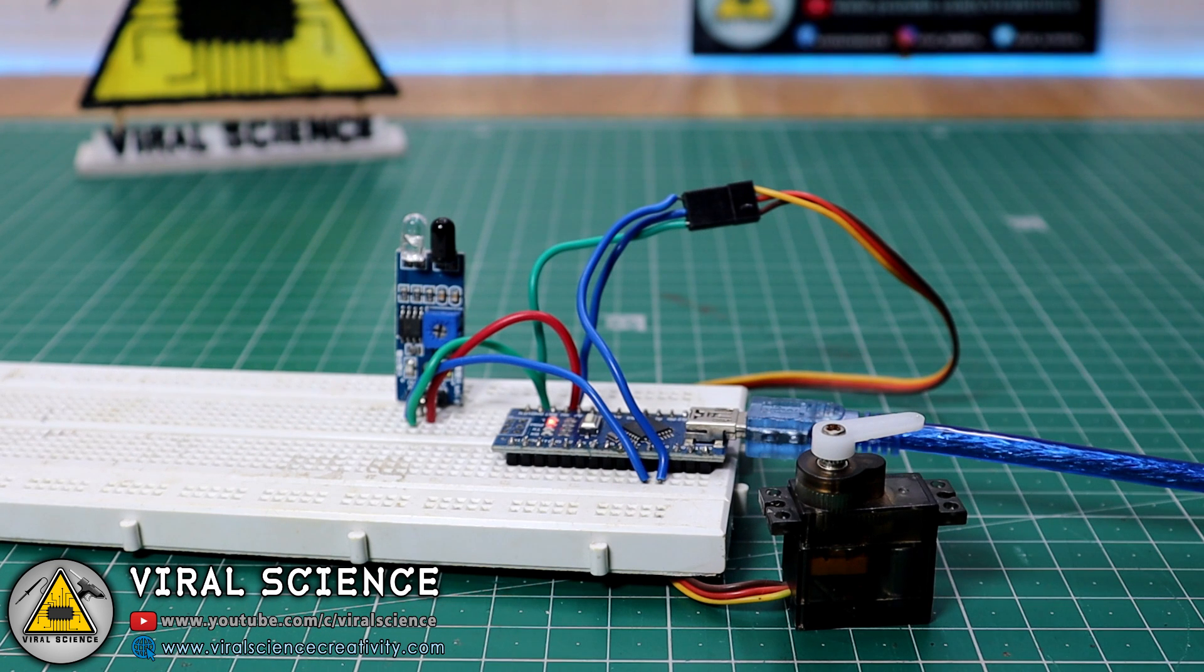As you can see, when IR sensor detects any object, the servo motor rotates 90 degree and again comes back to its initial position.